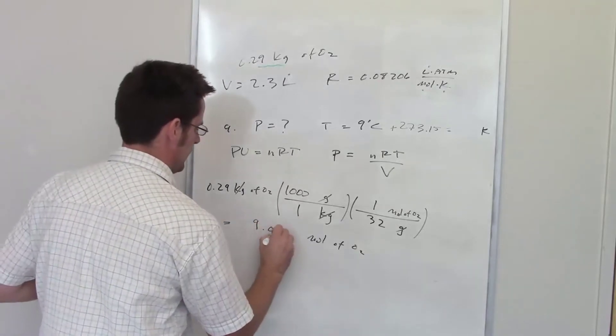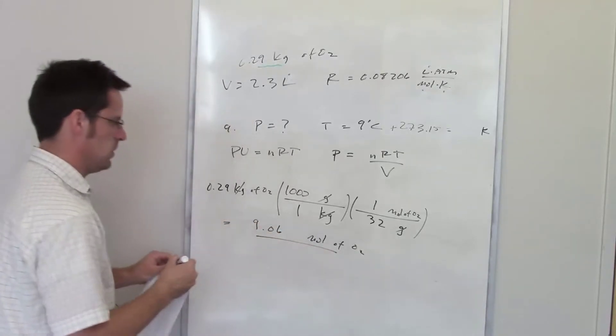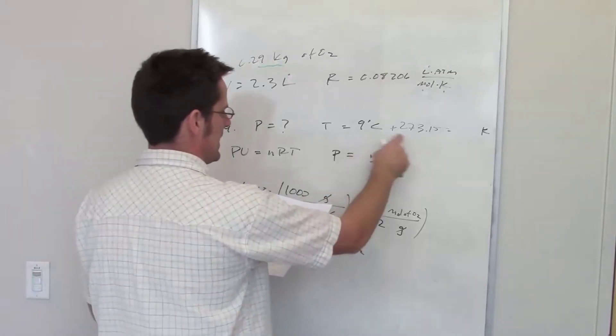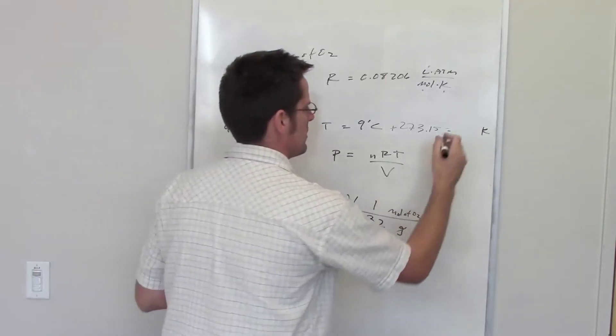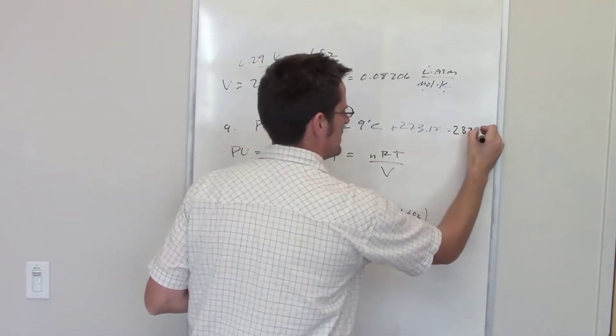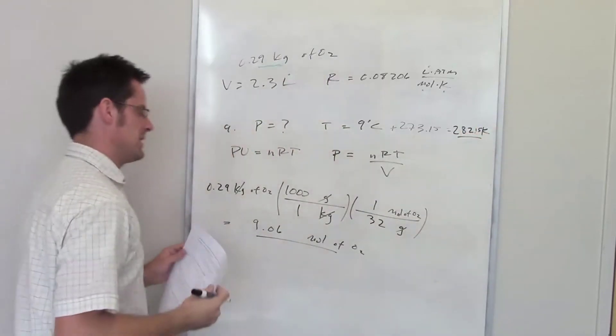Now I've got moles separately. I also need to determine the temperature, so I take 9 degrees, add it to 273.15, and that should be 282.15 kelvins.